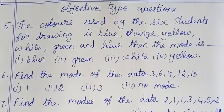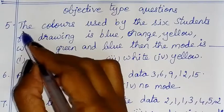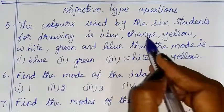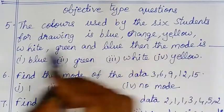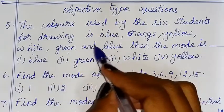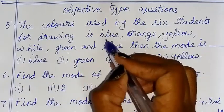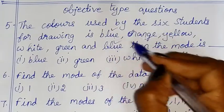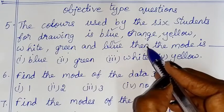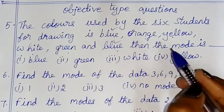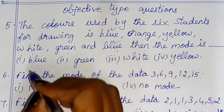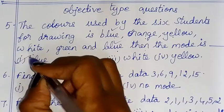Now for objective type questions. The colors used by six students for drawing are: blue, orange, yellow, white, green, and blue. The mode is blue, since blue appears 2 times. So option one — blue — is correct.